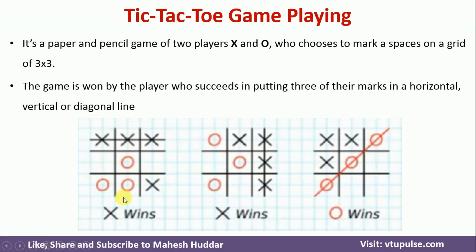For example, in the first case, X has succeeded in placing 3 marks in a horizontal row, so X is the winner. In the second case, X is the winner because he placed 3 marks in a vertical row. In the third example, O has placed marks in a diagonal line, so O is the winner.